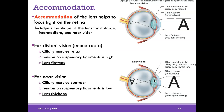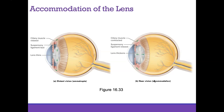In emetropia the lens is flat and the suspensory ligaments are very tense because the ciliary muscles are relaxed. When we need to accommodate for near vision and thicken the lens, the ciliary muscles contract, the ligaments become more relaxed, and the lens thickens so it can refract more light onto the retina.